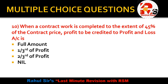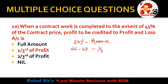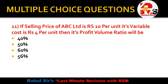Question number 10: When a contract is completed to the extent of 45%, how much profit is transferred — full amount, one-third, two-third, or nil? The answer is one-third. If completion is up to 24%, the entire profit is transferred to reserve. From 25% to 49%, one-third is transferred using the formula: 1/3 × notional profit × cash received ÷ work certified. If 50% or above, two-third is applied.